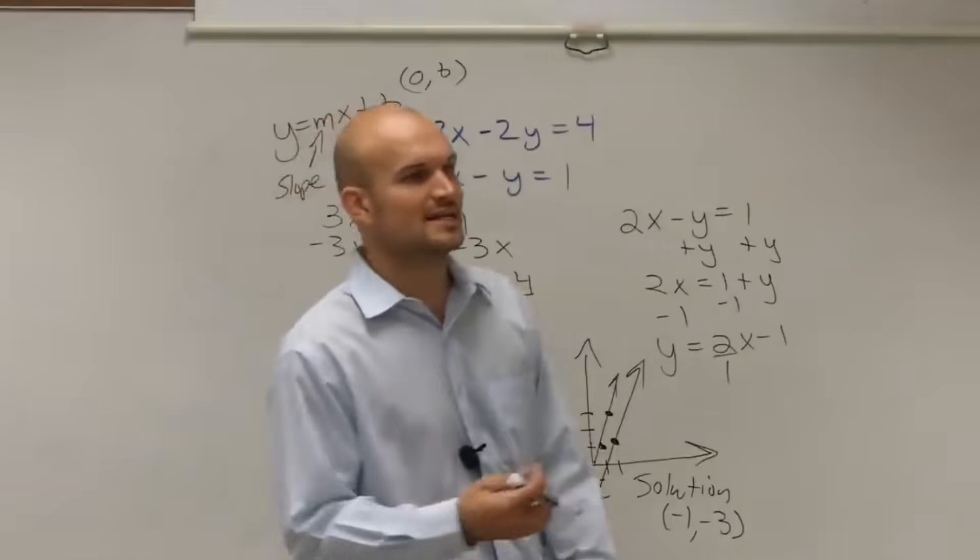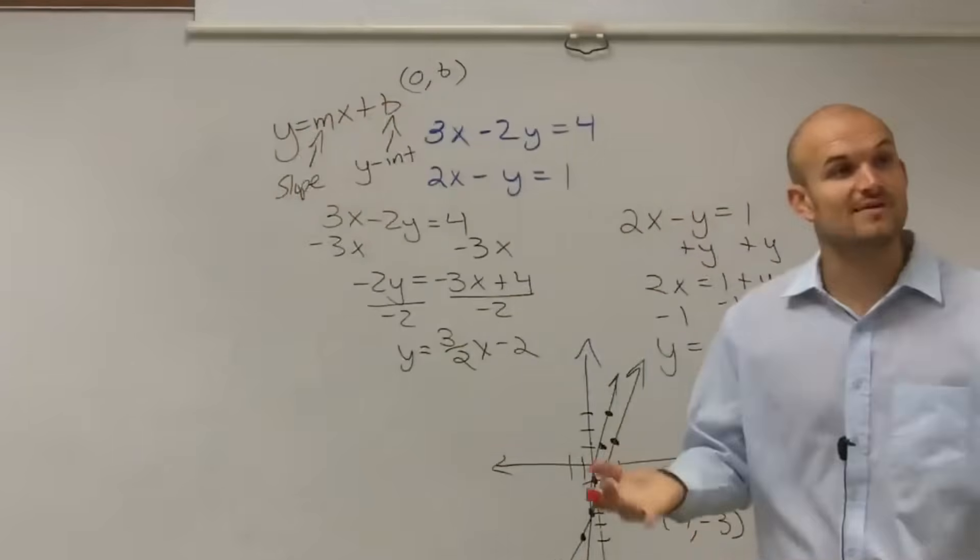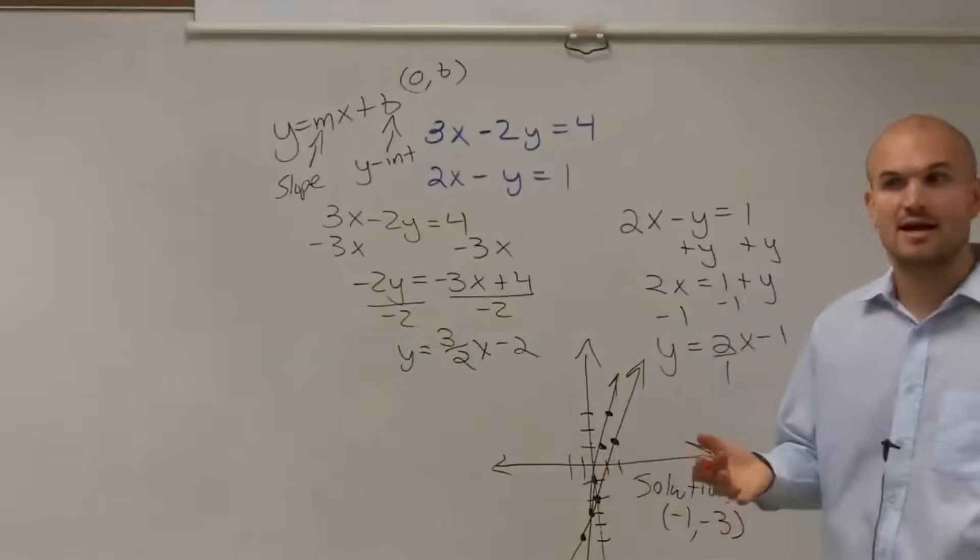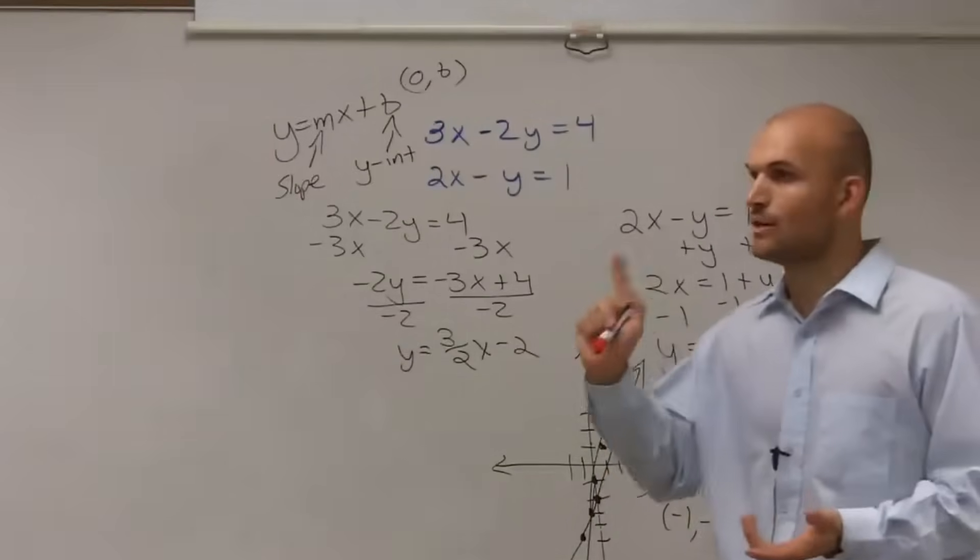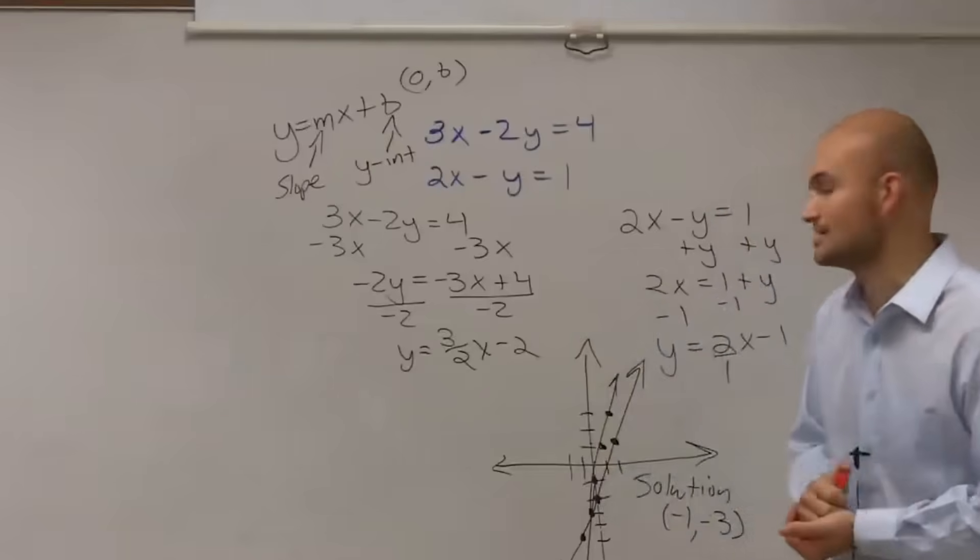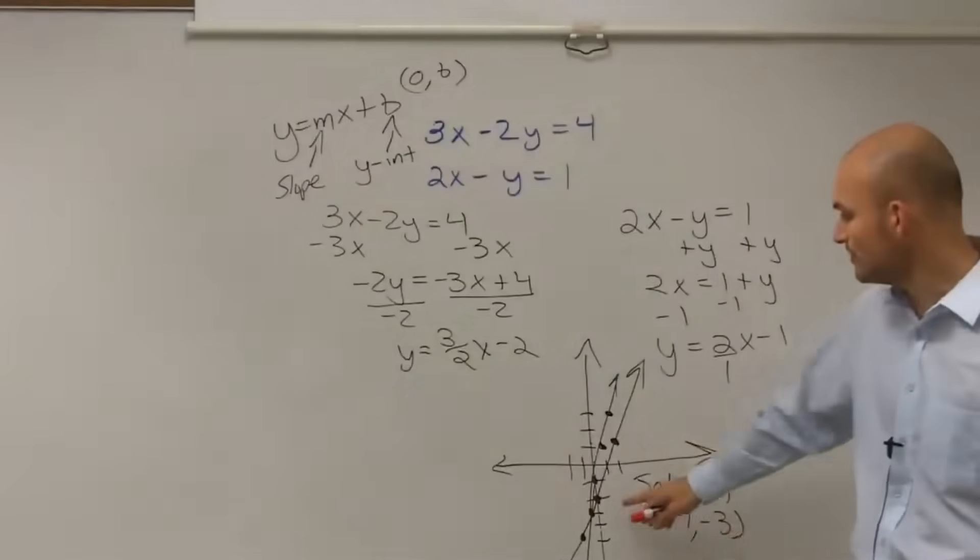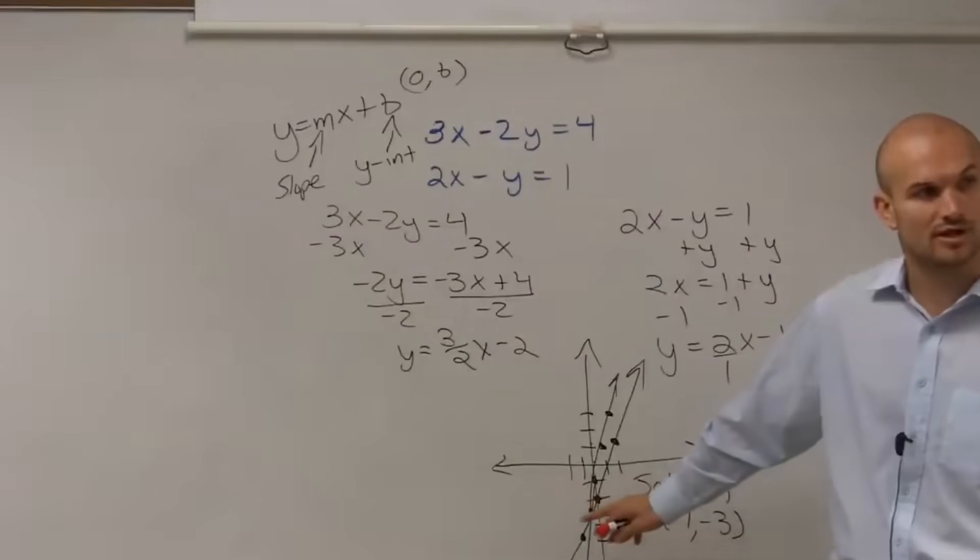So we could say the solution is at the point of negative 1, comma, negative 3. Because that is the intersection. So then we look at our solution. Is it consistent or inconsistent? Since we have a solution, it is consistent. And is it independent or dependent? Since we only have one solution, it is going to be an independent solution. So it's an independent, consistent solution. And we can just write our solution as the coordinate point. Because at that coordinate point, our two graphs are equal to each other for x and y.